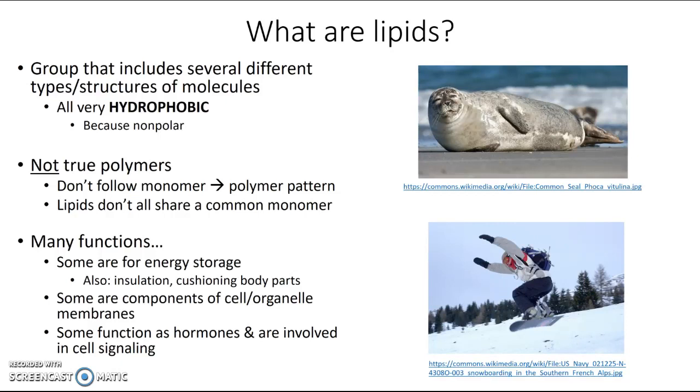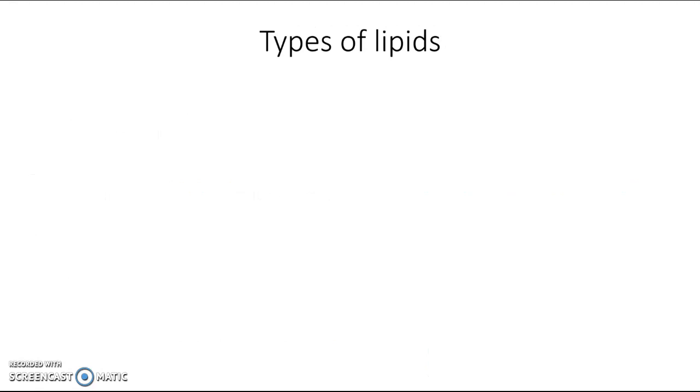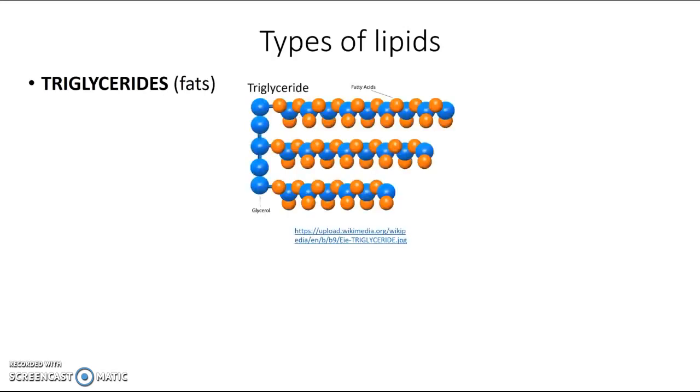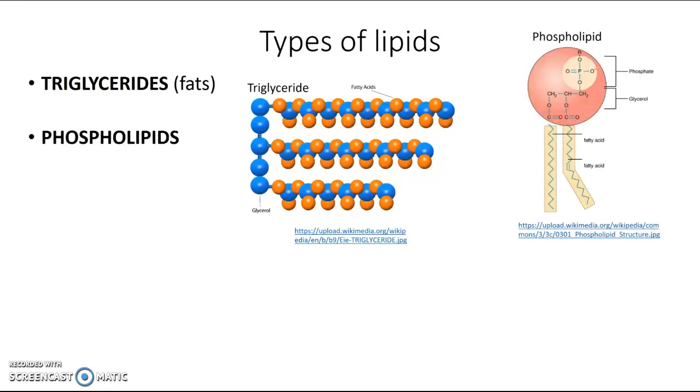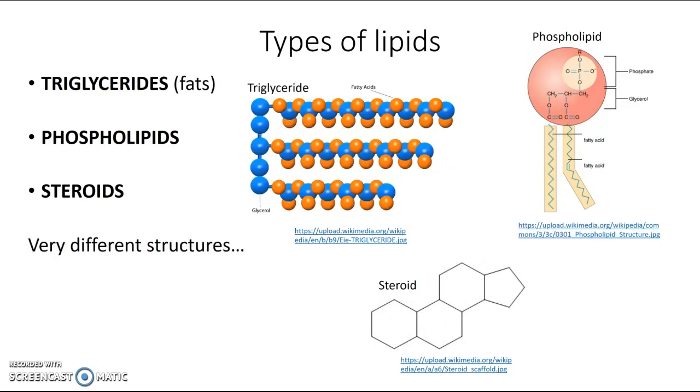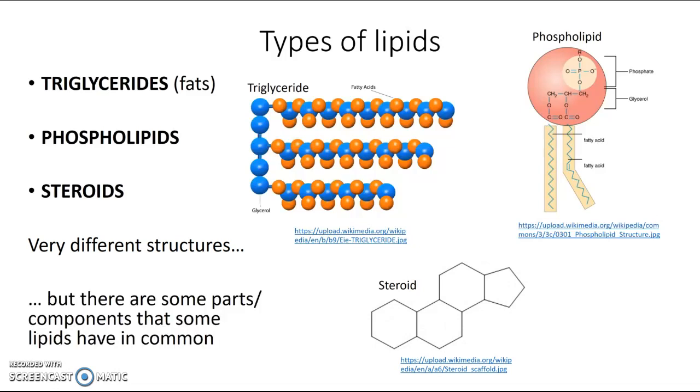So let's take a look at the general types of lipids. For this class, you're going to need to know three general types of lipids. First one is the triglycerides, which are also known as fats. They have this general structure. The next group is the phospholipids, which look kind of like that. And the last group is the steroids, which look kind of like that. So you can see they're really different in terms of their structures. They're not very similar at all. They don't all have the same monomers.